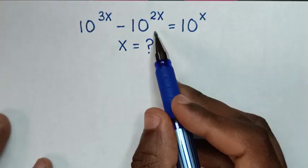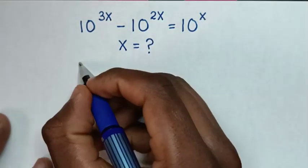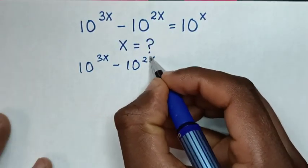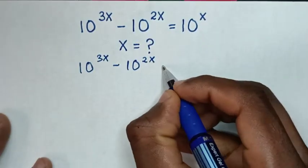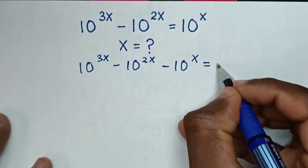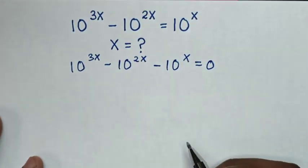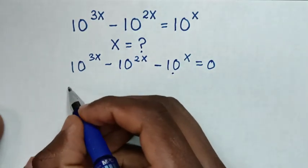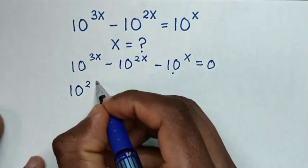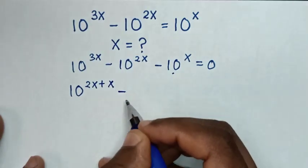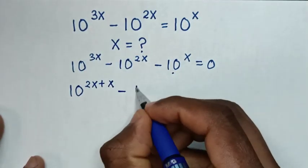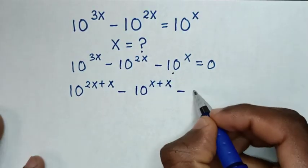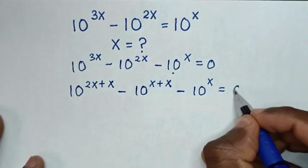First we take this to the left side. So it will be 10 to the power of 3x minus 10 to the power of 2x, then minus 10 to the power of x is equal to 0. Then in the next step we make 10 to the power of x a common factor.